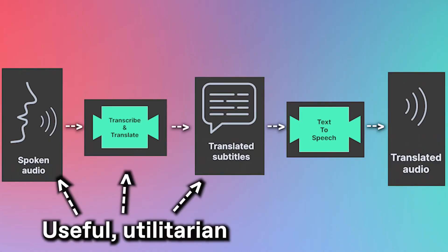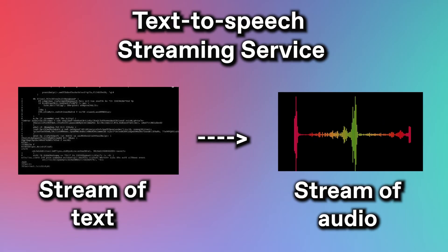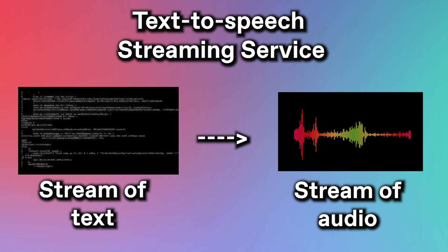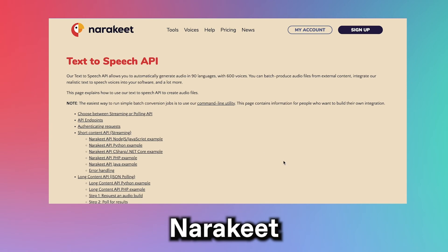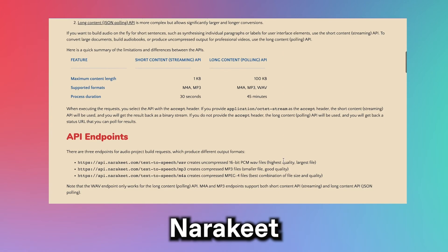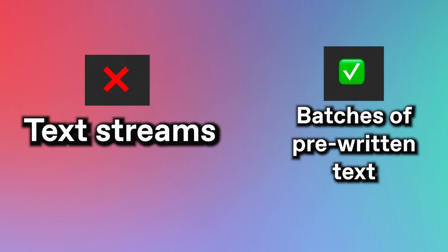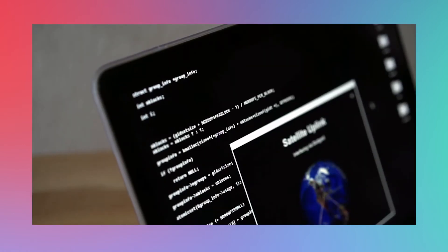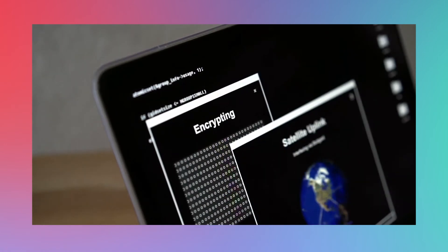That's the useful, utilitarian part of this application. Up next is the fun sci-fi part. Sadly, there doesn't seem to be a simple text-to-speech streaming service — that is, a service that allows a computer to read a stream of text and output a stream of audio. However, here's what we were able to find. Narakeet is an incredible resource that allows you to take a stream of text and turn them into audio files. Meanwhile, popular text-to-speech voices all seem to require batches of pre-written text as their input rather than a text stream. So with those limitations in mind, here's what we came up with. First, enjoy this generic voice reading a translation of BBC Radio in French.